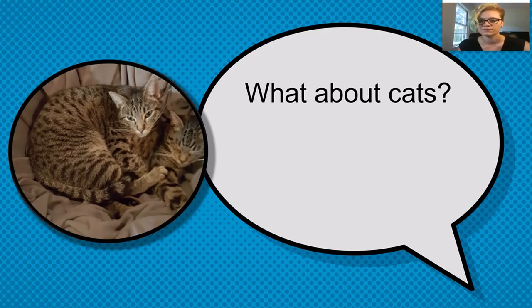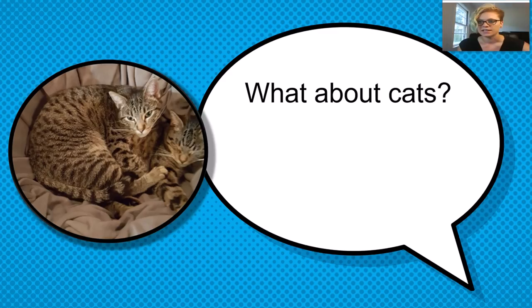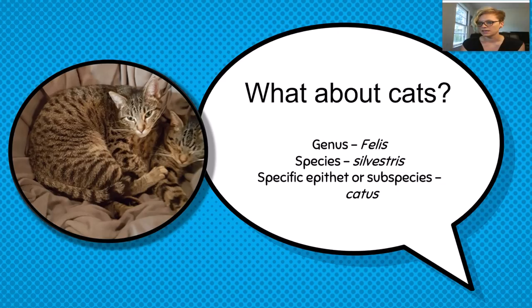What about our kitties? For cats, we're going to start with the genus, which would in this case be Felis. The next would be the species name, sylvestris, and the specific epithet or subspecies, catus. So when we put it all together, we have Felis sylvestris catus.